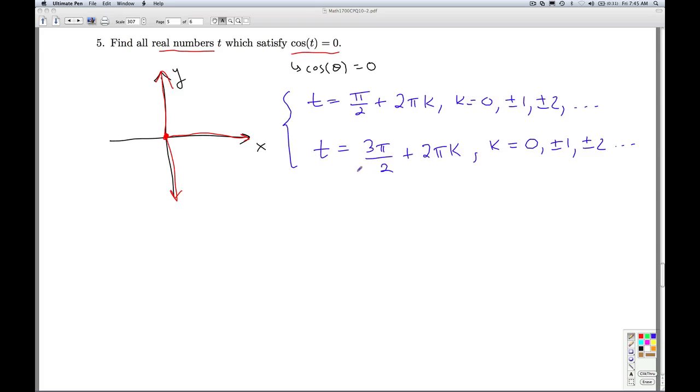This isn't incorrect, but we can actually shorten things up a little bit. Because the terminal sides of these two angles are actually exactly π units apart, we can actually combine these solutions to be any angle whose terminal side is π units away from π/2. Or, I could put 3π/2 there.